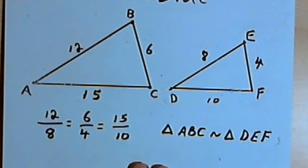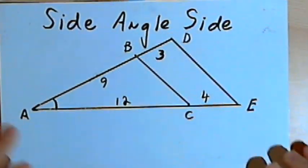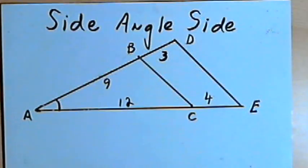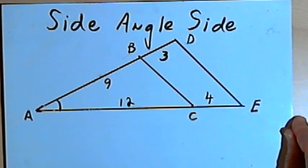Let's look at side-angle-side. With side-angle-side similarity, we say two triangles are similar if they have two pairs of corresponding sides that are proportional, and if the included angles are congruent.